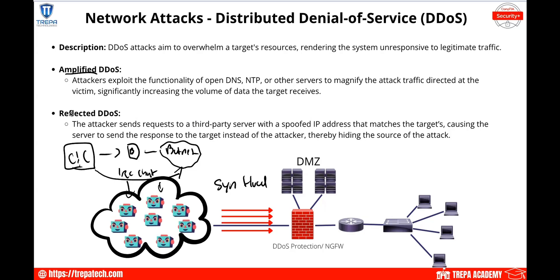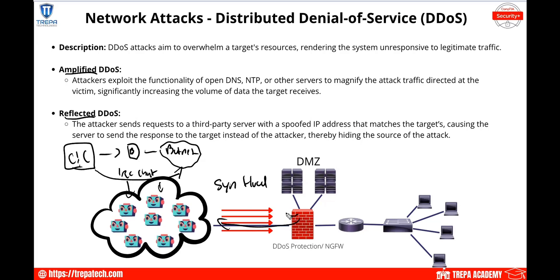There are two types of DDoS attacks to cover here. Amplified DDoS is where attackers exploit the functionality of open DNS, NTP, or other servers to magnify the attack traffic directed at the victim. Reflected DDoS is where the attacker sends requests to a third-party server with a spoofed IP address matching the target, causing the server to send its response to the target instead of the attacker — essentially spoofing the source IP so responses flow back to the victim.